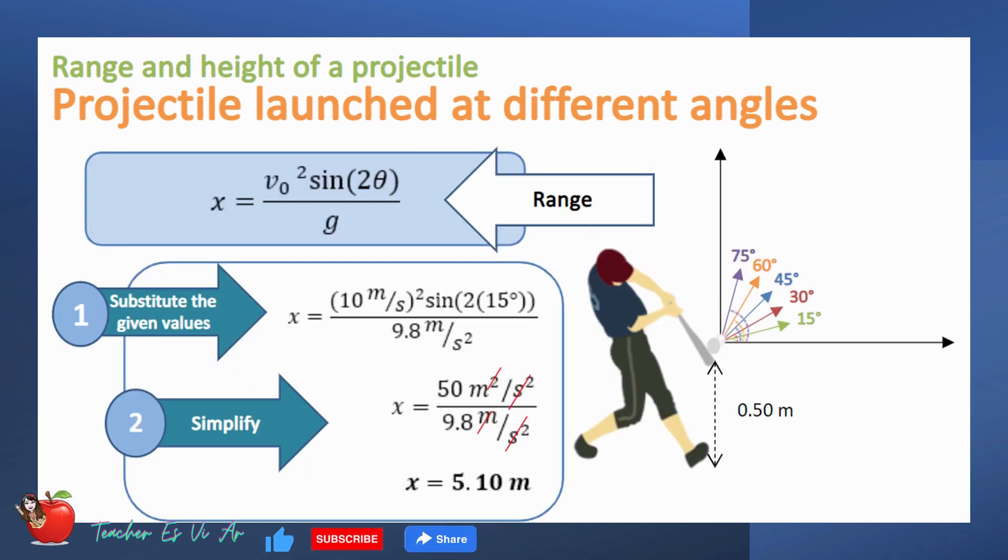Now, let's try to solve the range of the different angles using the equation x. Let's begin with 15 degrees. Let us substitute the given values into the equation, then simplify. The range at an angle of 15 degrees is 5.1m.